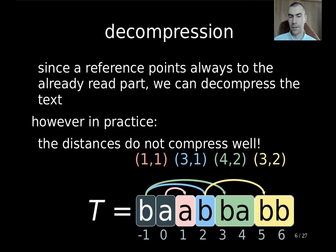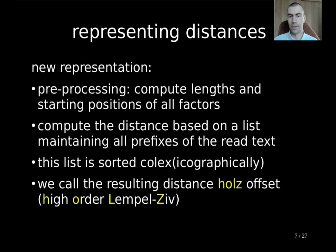What we now propose in this talk is a new representation, meaning that we want to find an alternative distance representation. In our setting, we assume that we have already preprocessed the text with an LZ algorithm, so we know the factor starting positions and the length. And our distance is now based on a list maintaining all prefixes of the read text. This list is sorted in colex order or colex-ographically. We call that distance Holz offsets for high order LZ.